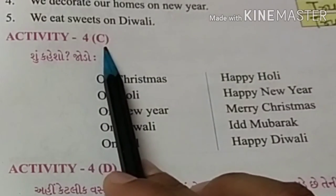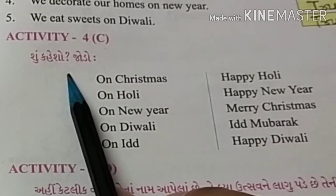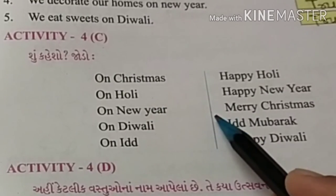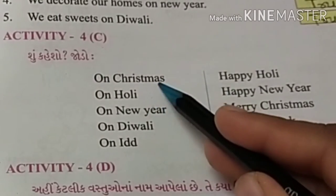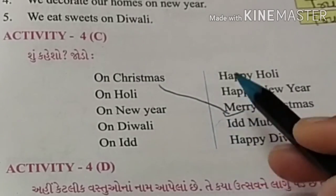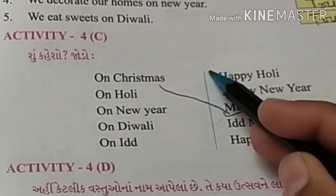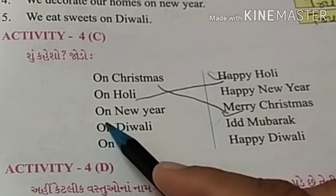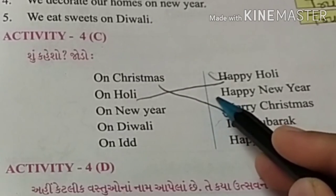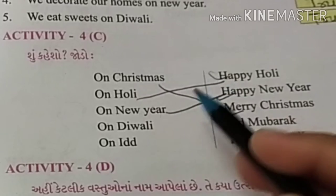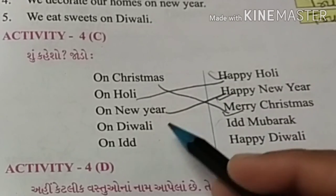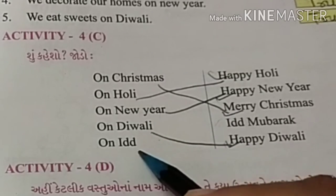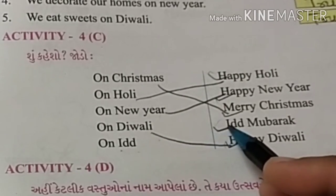Activity 4th C. જોડો. On Christmas — Merry Christmas. On Holi — Happy Holi. On New Year — Happy New Year. On Diwali — Happy Diwali. On Id — Id Mubarak.